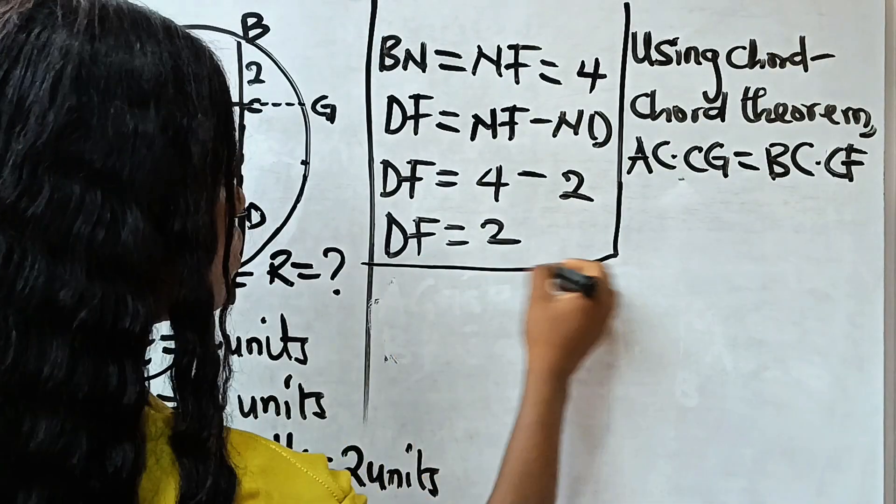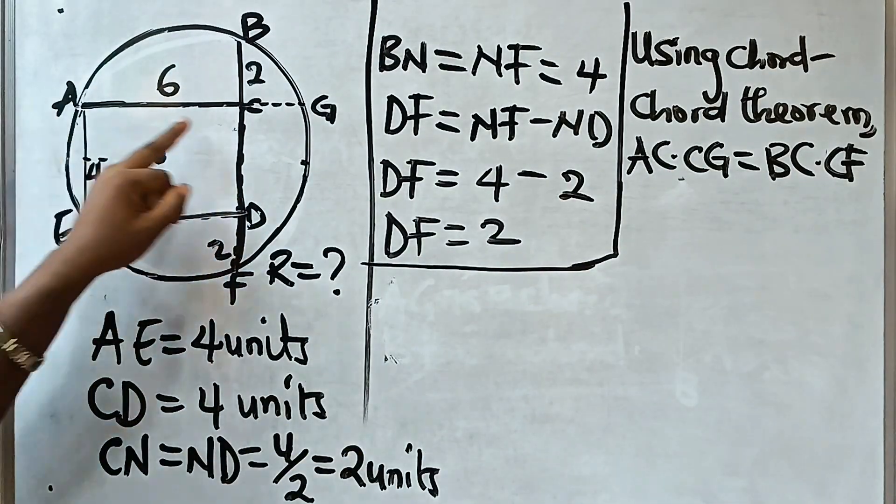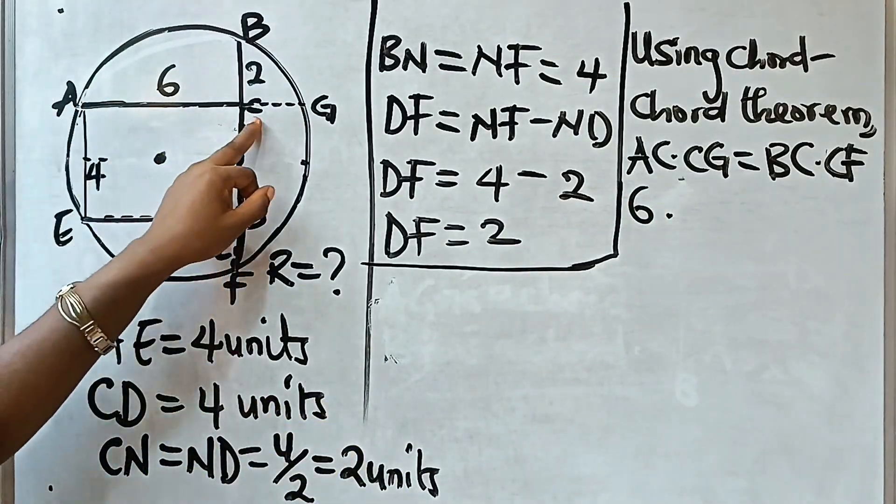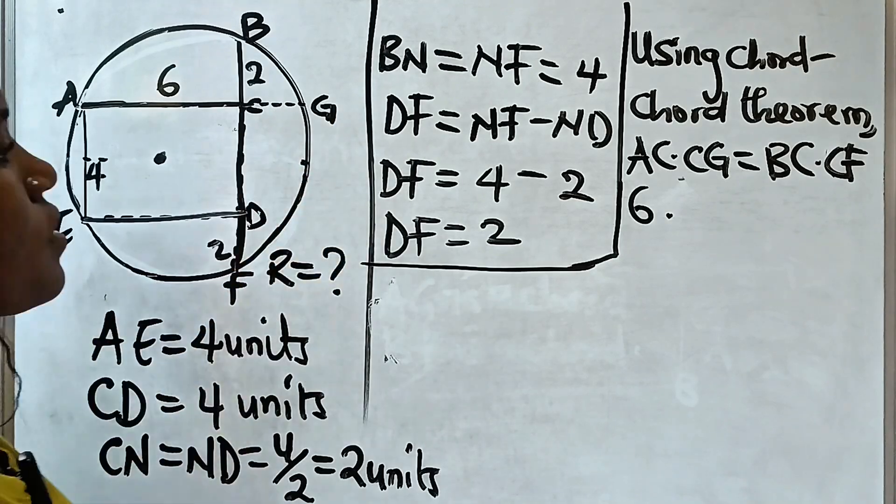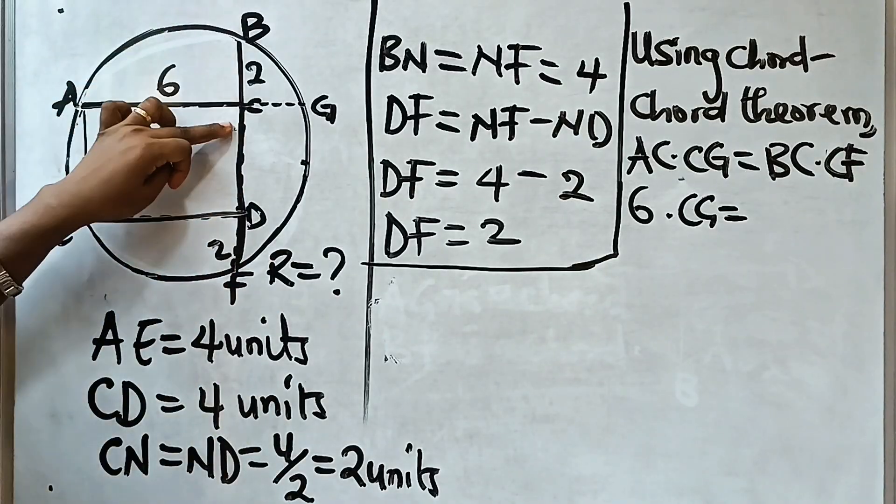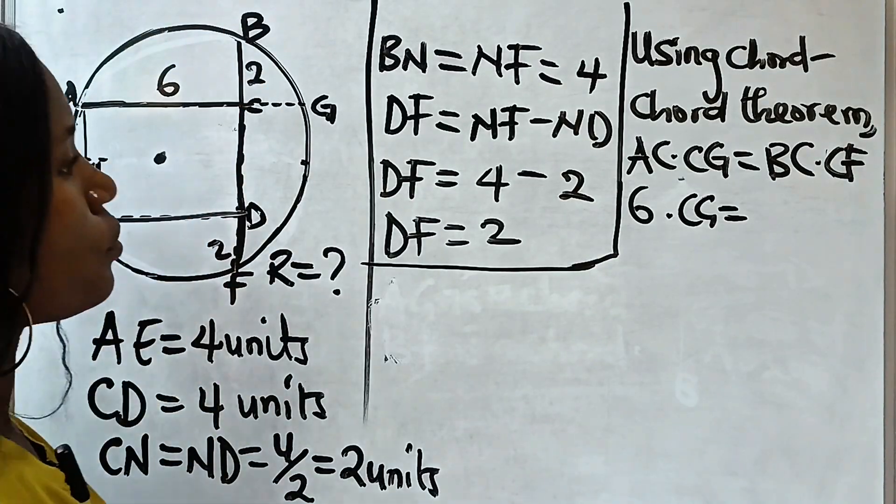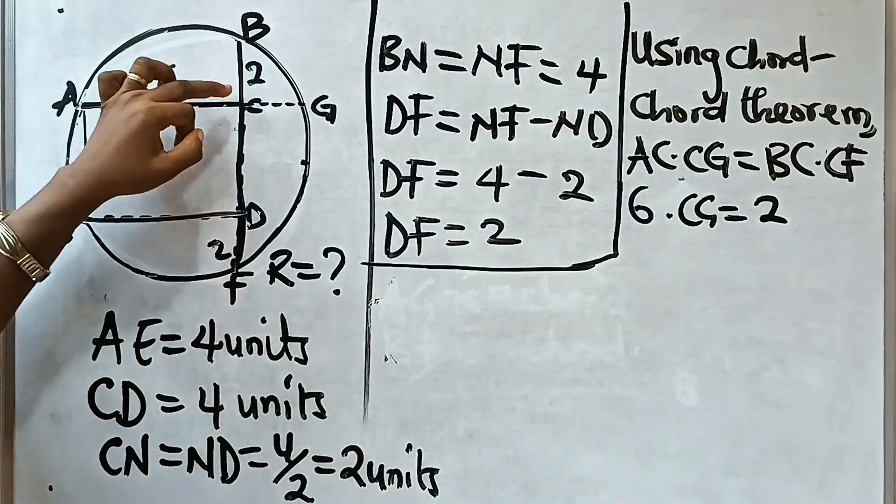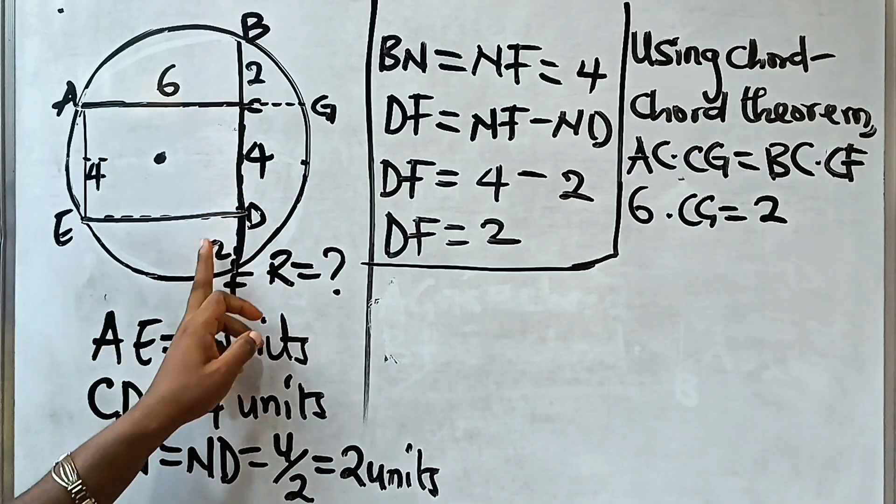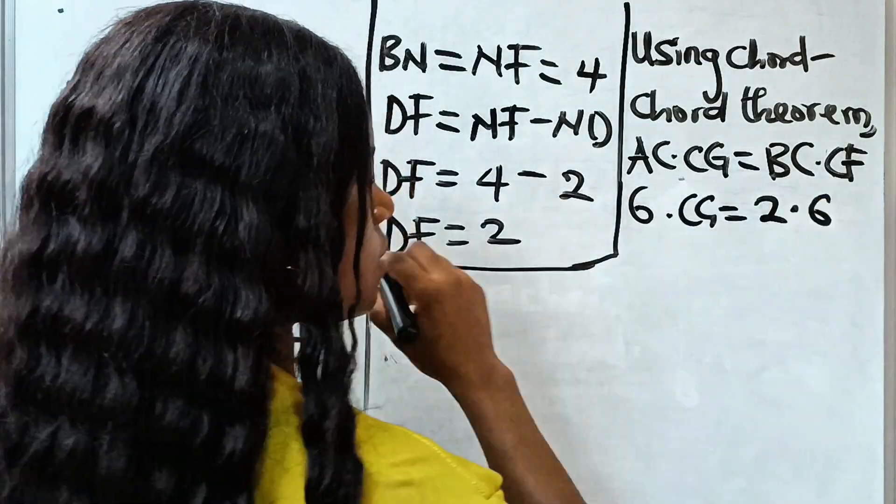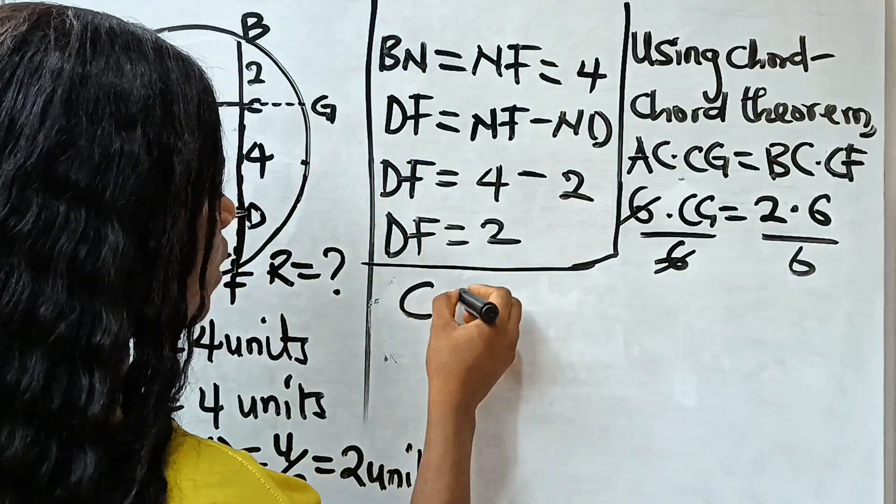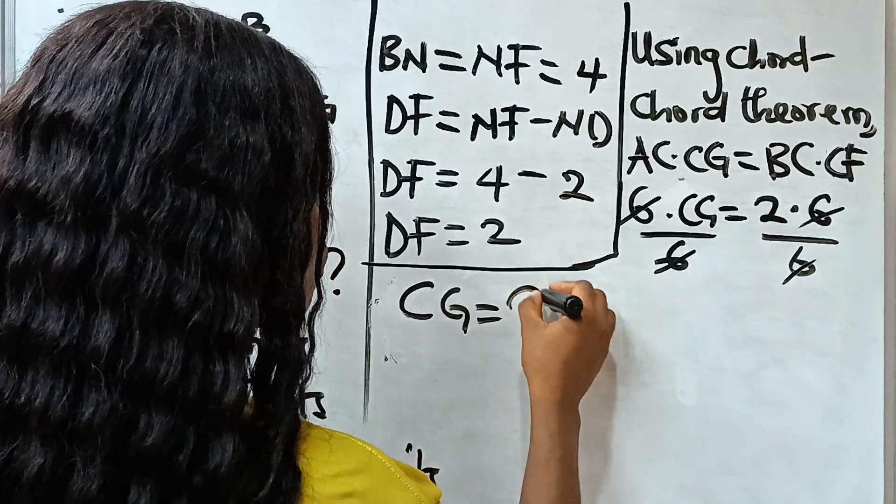Now, applying the chord-chord theorem, AC is 6. So 6 multiplied by CG, which is unknown, is equal to BC, which is 2, and CF is 4 plus 2, which is 6. So we divide both sides by 6, and we have that CG is equal to 2 units.